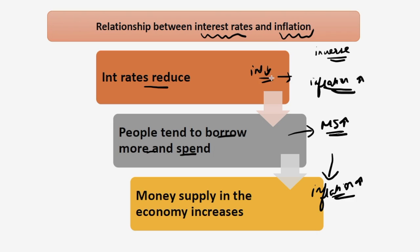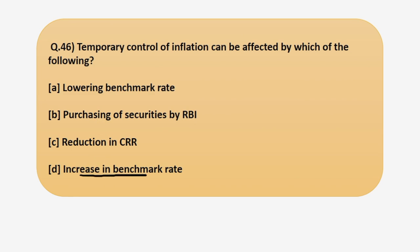So in the question, if we have to control inflation, then what RBI can do is increase its interest rate. Increase in the benchmark rate is the correct answer because this will increase the cost of borrowing, then people will reduce their borrowing habits, money supply will reduce in the economy in the shorter term, and therefore inflation will be controlled. So option D is the correct answer here. Now let's move on to the next question for today.